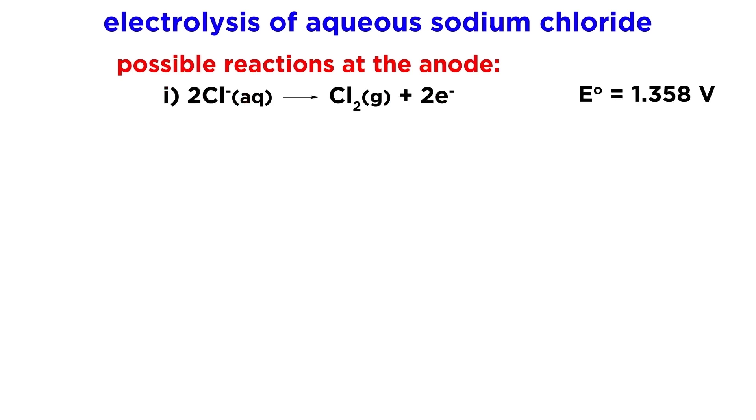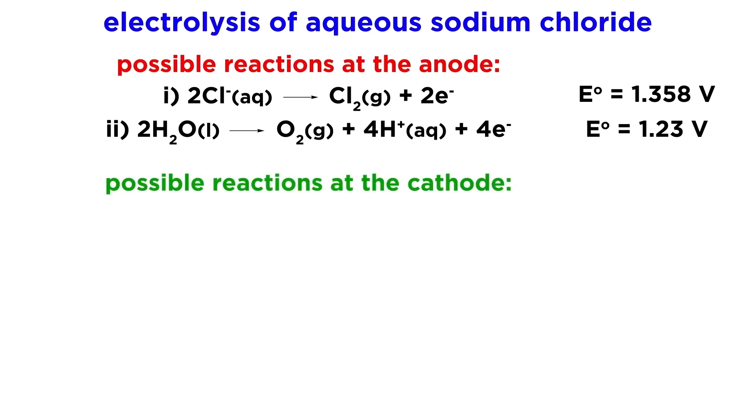First, we know from electrolysis of molten sodium chloride that chloride ions can be oxidized, but we know from the electrolysis of water that water molecules can be oxidized, so these are the two possible reactions at the anode. Now let's see what could happen at the cathode.